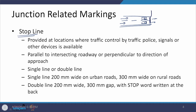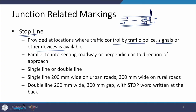Stop lines are provided at all locations where traffic control is managed by traffic police, signals, or other devices which control the way traffic moves at that location. They are provided parallel to the intersecting road — parallel to the edge of the intersecting road and therefore perpendicular to the direction of movement. These stop lines can be provided as a single line or a double line.